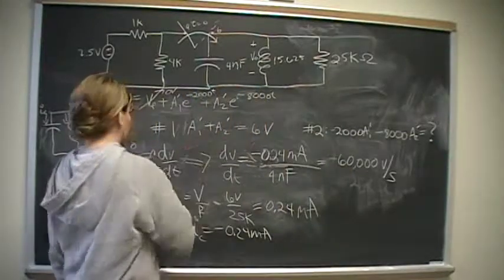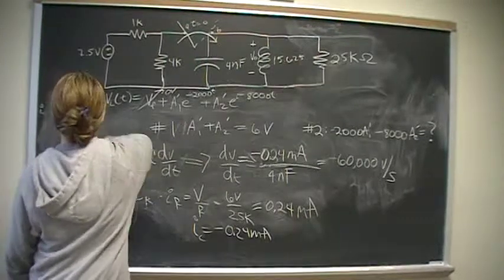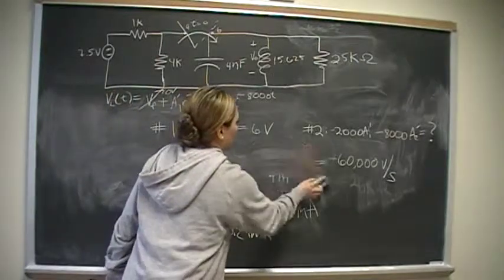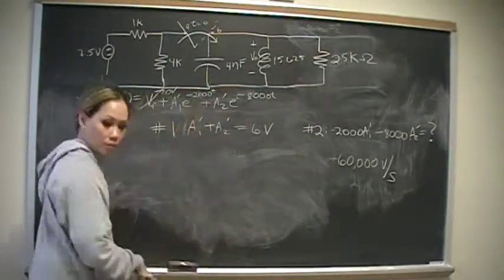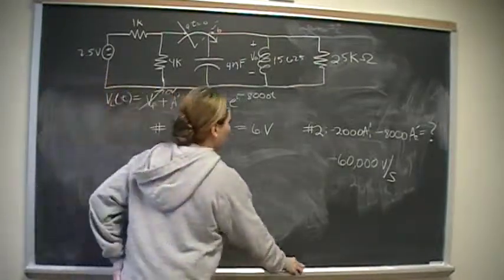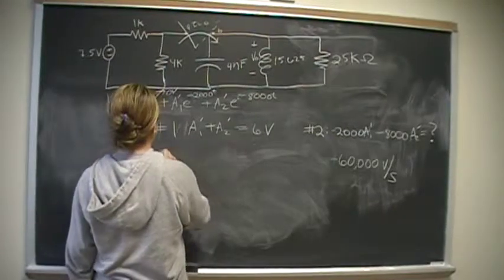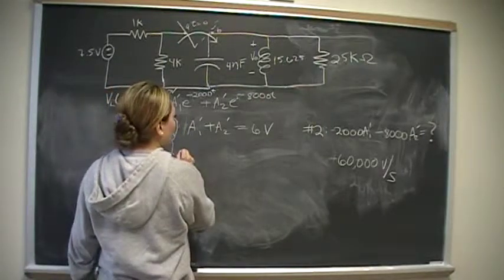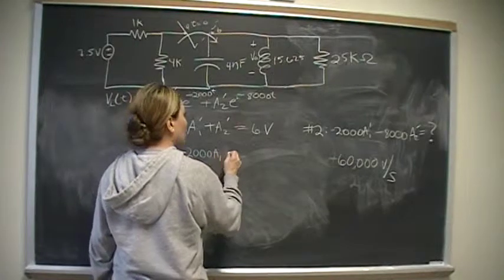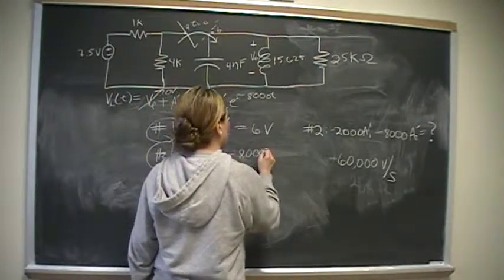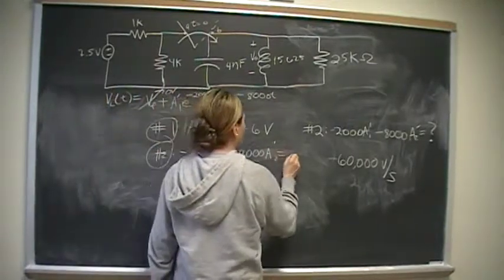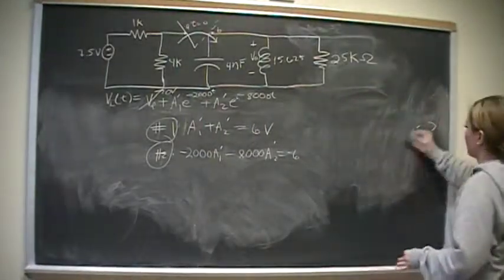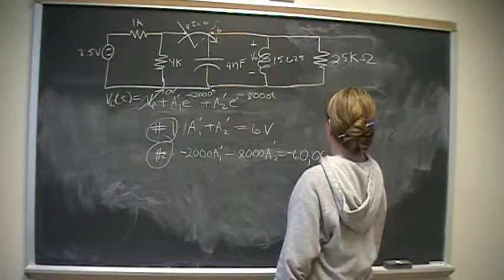So now we have both equations. Equation number one. Equation number two is going to be negative 2,000 A1, negative 8,000 A2 prime. It's going to be equal to negative 60,000 volts per second.